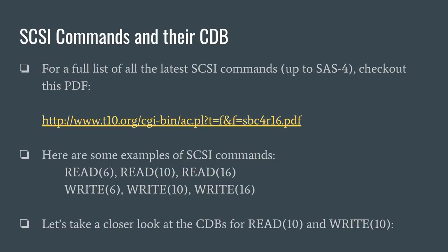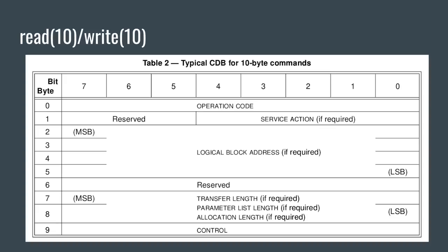Let's take a closer look at the format of some of these CDBs. Here we're looking at the format of the 10-byte CDB that can be used for read 10 or write 10 commands. The first byte is the opcode, which describes what the command is. For example, the read 10 command has an opcode of 0x28 in hexadecimal, and the write 10 command has the opcode of 0x2A in hexadecimal. The most relevant part of this CDB to our discussion are bytes 2 through 5 — these are the bytes used for logical block addressing, and with only 4 bytes, that provides a total of 4 times 8 bits, or 32 bits.